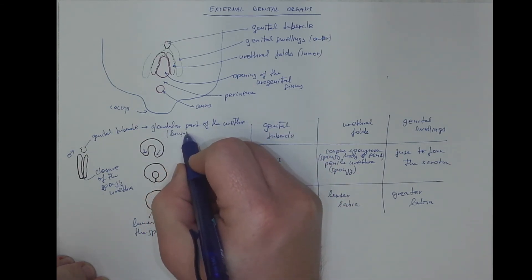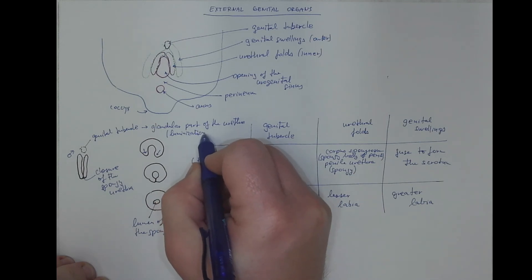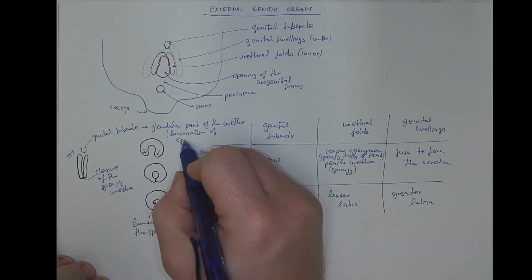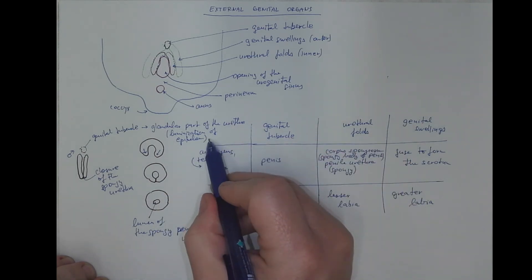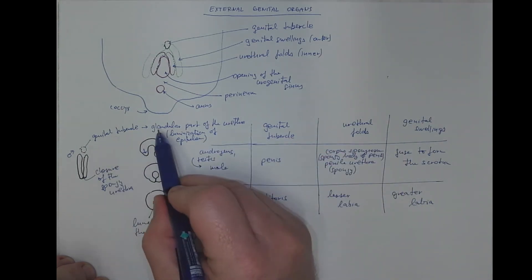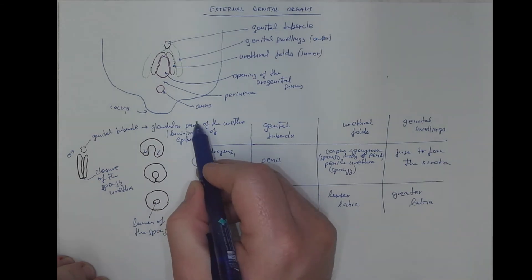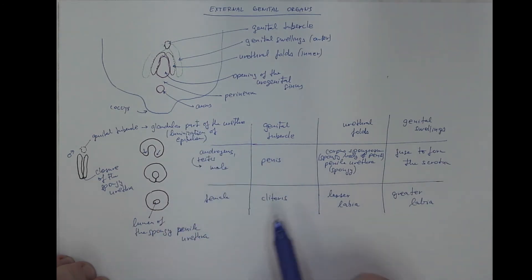There is a canalization of epithelium that forms the external orifice of the glandular urethra and the navicular fossa there.